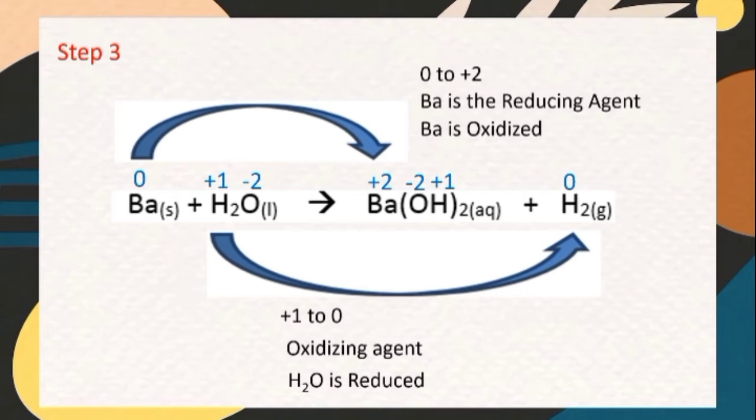The third step is to determine electron loss or gain. Barium's oxidation number increased from zero to positive two, having two electron loss, while hydrogen have a decrease on its oxidation state from positive one to zero, gaining one electron, making it unbalanced for electron loss and electron gain.